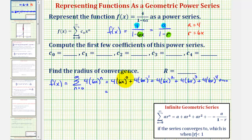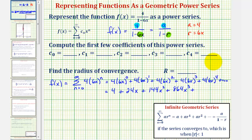Evaluating each term: 4 times 6 to the zero is 4; plus 4 times 6x equals 24x; plus 4 times 36x squared equals 144x squared; plus 4 times 216x cubed equals 864x cubed; plus 4 times 1296x to the fourth equals 5,184x to the fourth. So c sub zero is 4, c sub one is 24, c sub two is 144, c sub three is 864, and c sub four is 5,184.